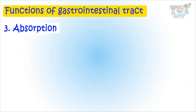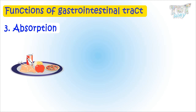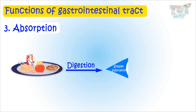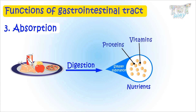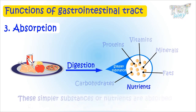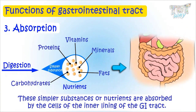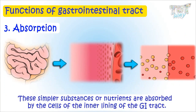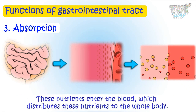Another important function is absorption. Food particles that are broken down into simpler substances are called nutrients. They can be protein, vitamins, minerals, fats, or carbohydrates. These simpler substances or nutrients are absorbed by the cells of the inner lining of the GI tract. These nutrients then enter the blood, which distributes them to each and every cell of the body for its working. This process is called absorption.